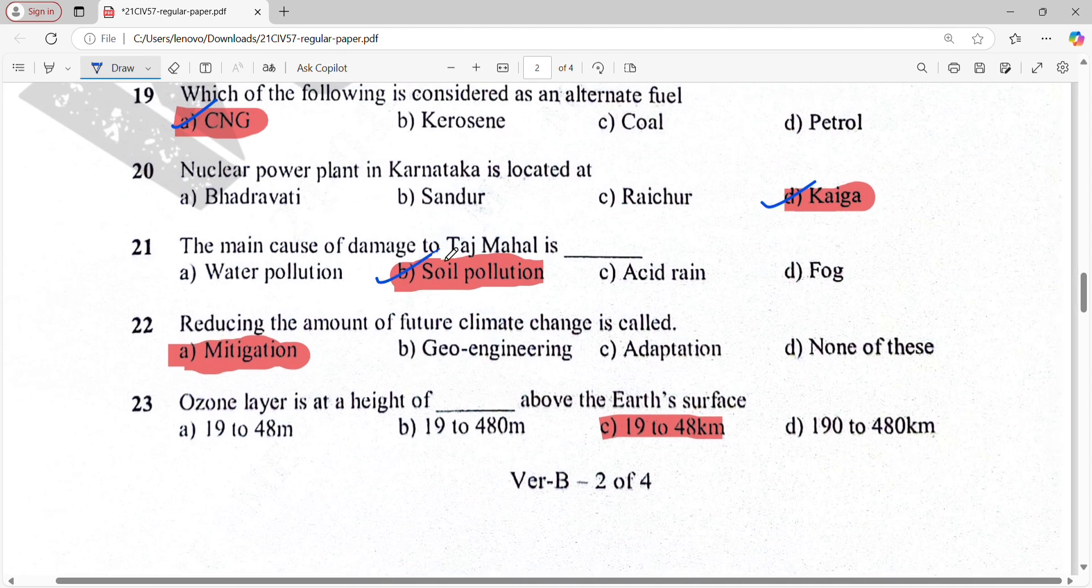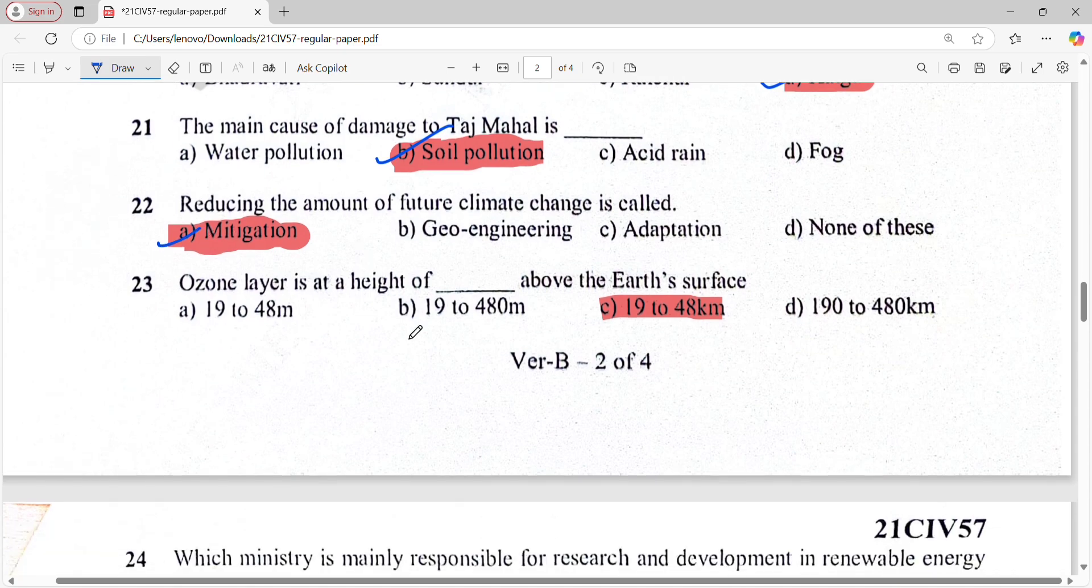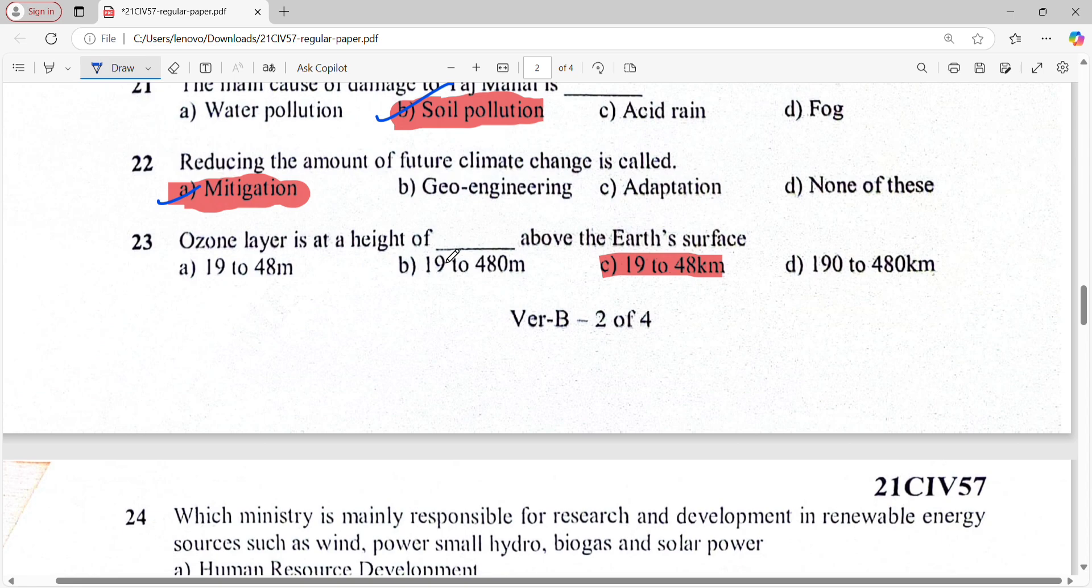The main cause of damage to Taj Mahal is soil pollution. Reducing the amount of future climate change is called mitigation. The ozone layer is at the height of 19 to 48 kilometers above the Earth surface.